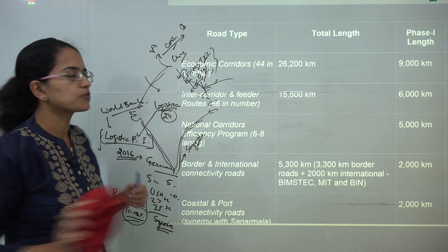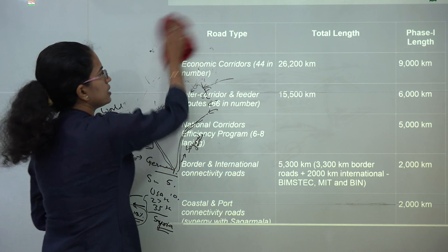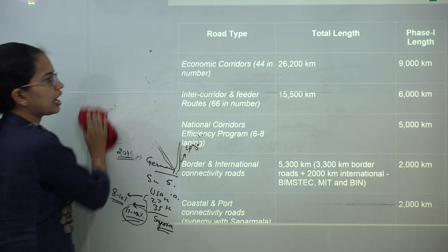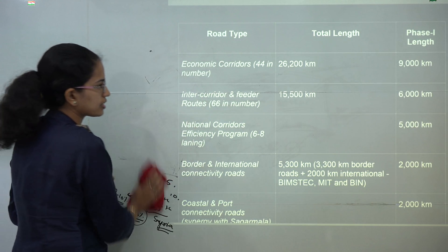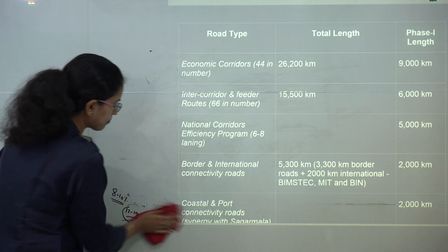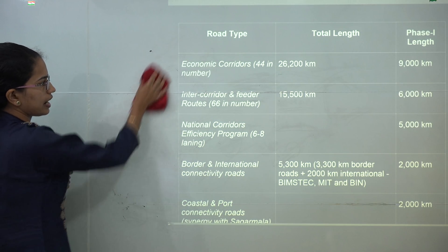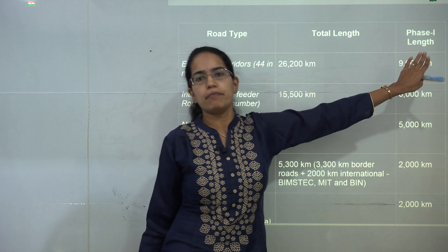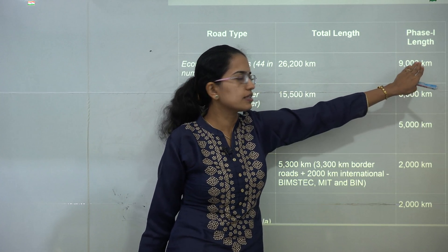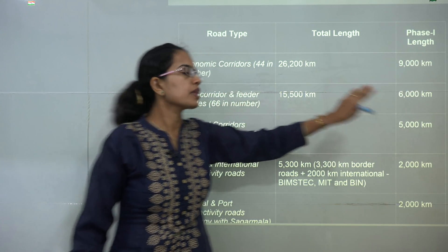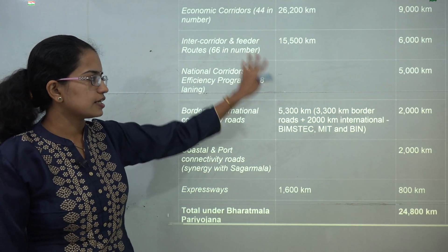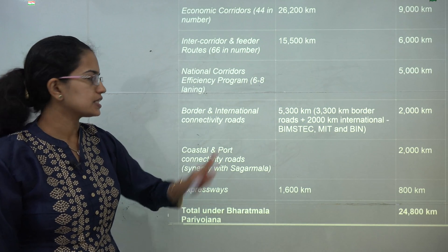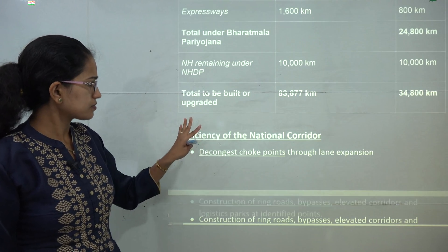Finally, we talk about the greenfield expressways which aim for express gain. There is an important table that summarizes the total projected developments under Bharatmala Pariyojna — what we aim for under phase one — showing the various categories like economic corridor, total length planned to build, and targets for phase one. This would be available on the Exam Race current affairs section.